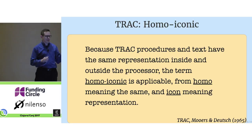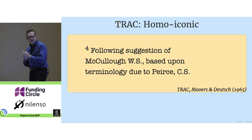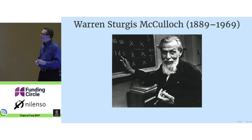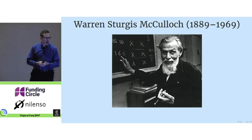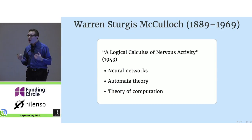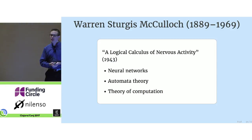On this sentence in the paper — as far as we can tell the first use of this term — they have a footnote: 'Following suggestion of McCullough W.S., based on terminology due to Peirce.' They spelled his name incorrectly, but W.S. McCullough is almost certainly Warren Sturgis McCulloch, an American mathematician who was around Cambridge and MIT at the time. He is best known for writing some of the earliest papers describing the foundations of what we would now call neural networks, and he also made various other contributions to computer science.